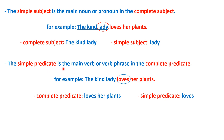The simple predicate is the main verb or verb phrase in the complete predicate. For example: "The kind lady loves her plants." What does the kind lady do? She loves her plants. So, "loves her plants" is the complete predicate. And the simple predicate is only "loves." Thank you.